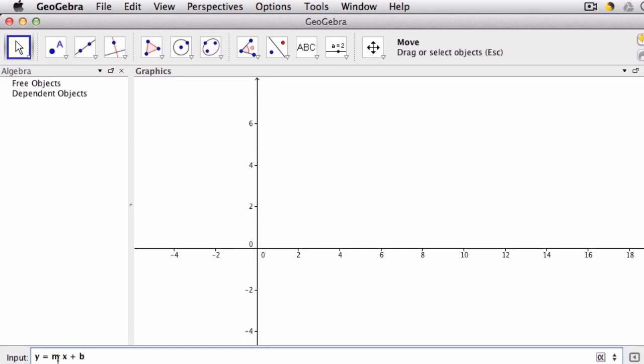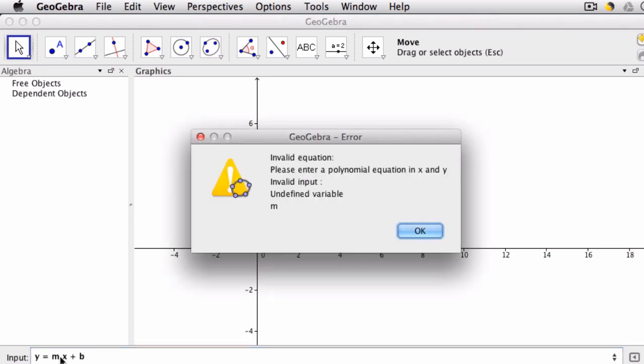I could type in m then an asterisk and an x, but I prefer to type less when possible. If I try to do this on GeoGebra, it's not going to work. Why? Because we have variables with no definition.